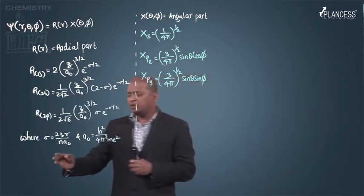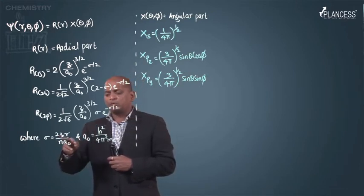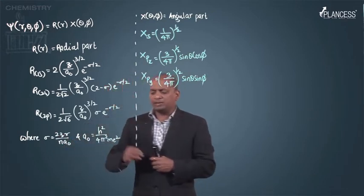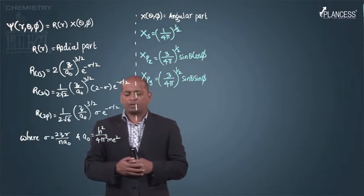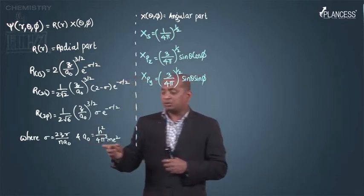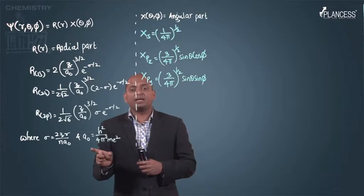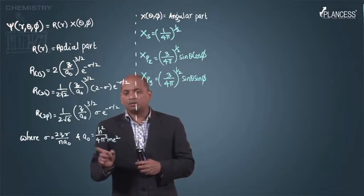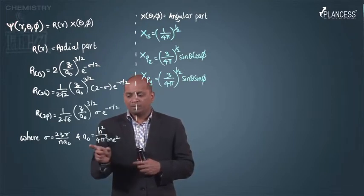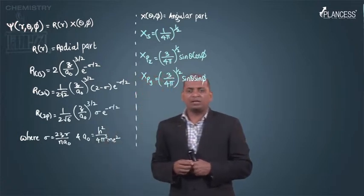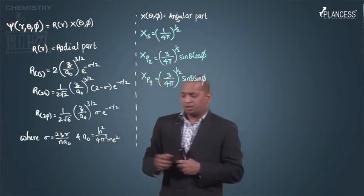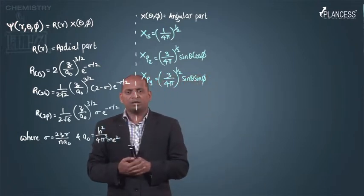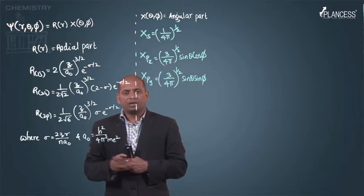What is sigma? Sigma stands for 2zr/(na0), and a0 is h²/(4π²me²). Actually, this is nothing but the radius of hydrogen atom. This is 0.529 angstrom. a0 is the radius of hydrogen atom.